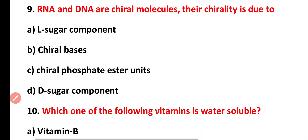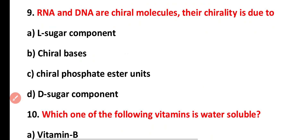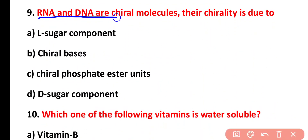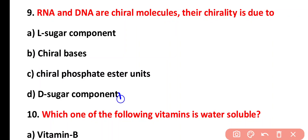Question nine: RNA and DNA are chiral molecules. Their chirality is due to: L-sugar component, chiral bases, chiral phosphate ester units, or D-sugar component. The correct answer is option D: D-sugar component.